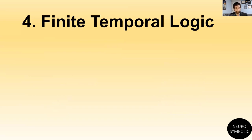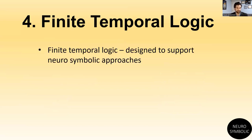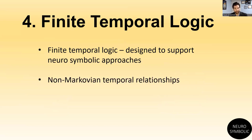PyReason also has a built-in finite temporal logic capability. It's a finite temporal logic — when dealing with neural networks and temporal reasoning, you're generally dealing with finite inputs, so PyReason is directly compatible with various neural architectures. Another aspect is non-Markovian temporal relationships: what happens at a given time step doesn't have to depend directly on the previous time step. Temporal relationships can span multiple time steps and be heterogeneous — some relationships might span one time period, others three, others twenty. It's totally arbitrary, whatever is either learned or designated upon the input.